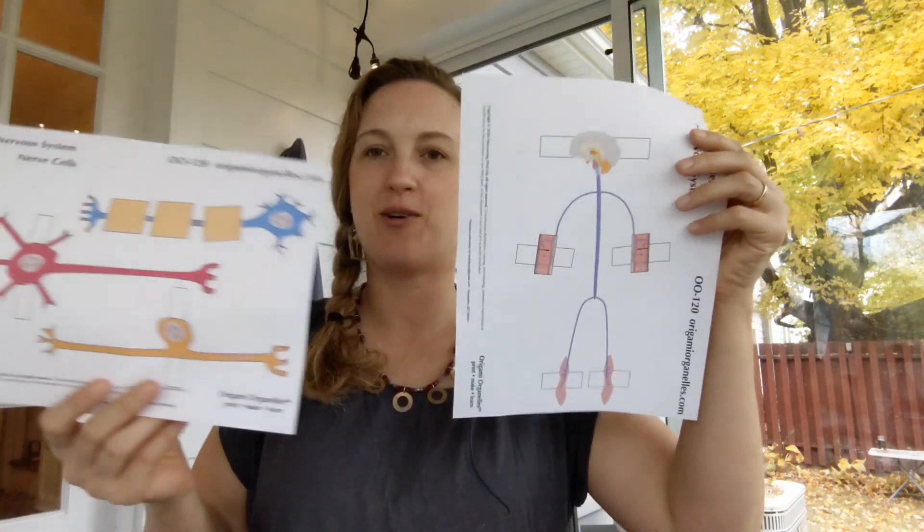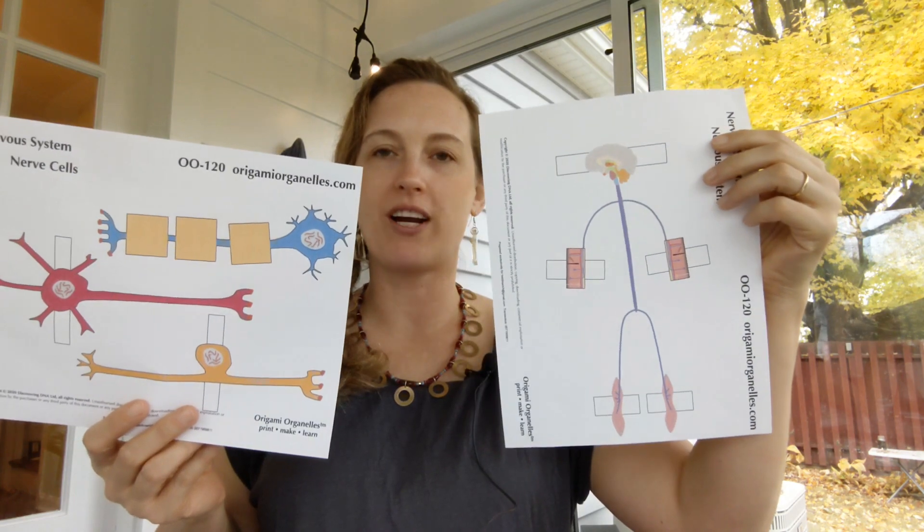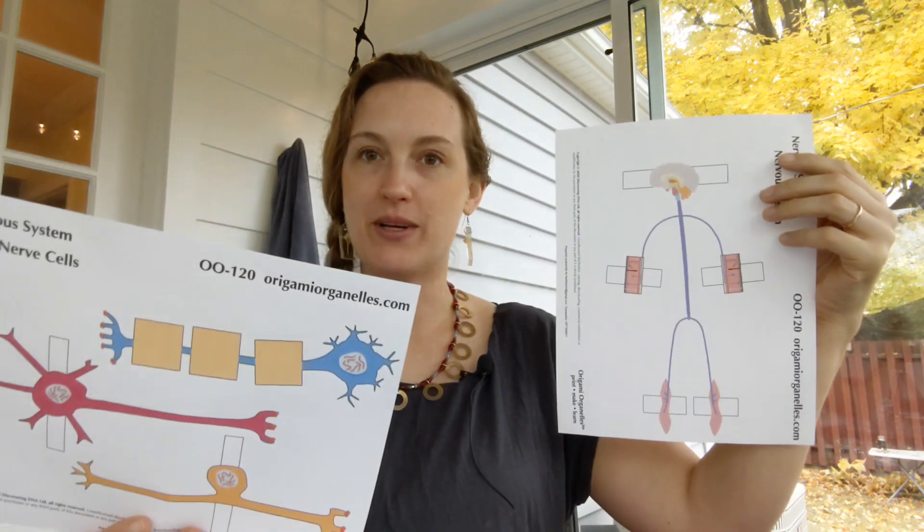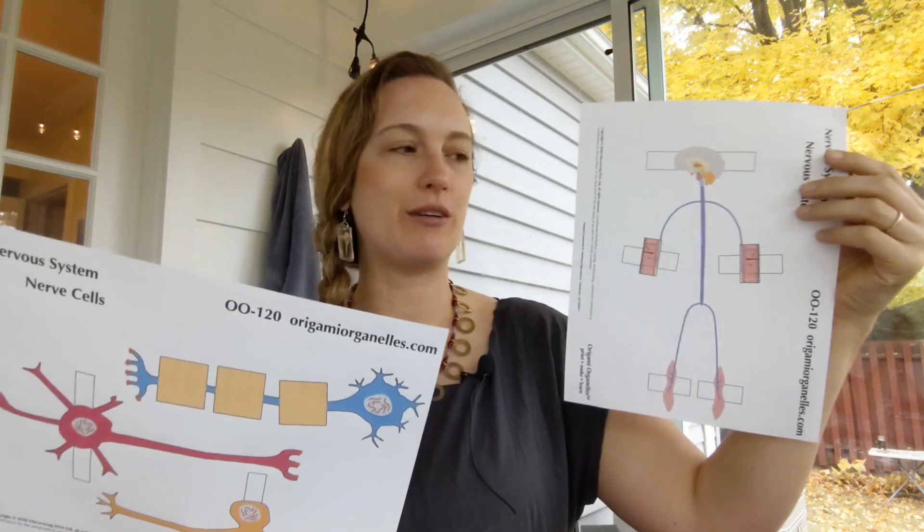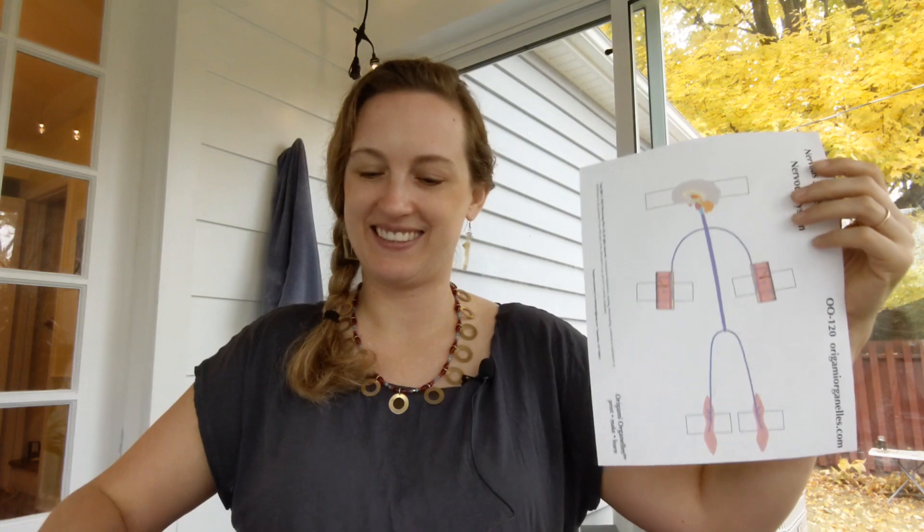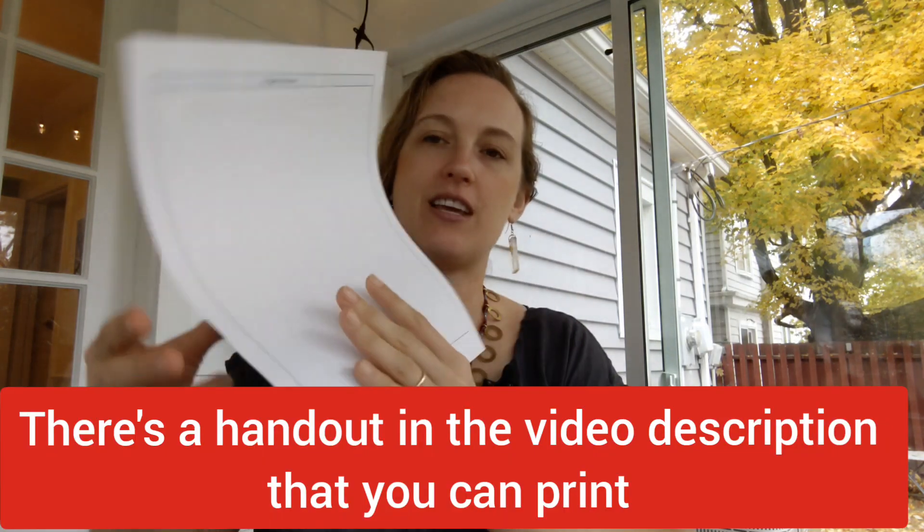Hi guys, I'm Heidi Hissrich and today I'm going to talk to you about the origami organelles nervous system model. My students and I are going to be building this to learn about the central and peripheral nervous system and the three main kinds of neurons. Before you start watching this video, if it's possible, print the handout from underneath the video description.